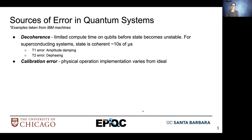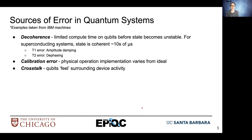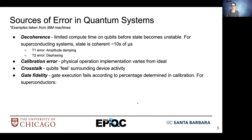We also encounter calibration error, which involves our physical operations varying from the ideal operation. While we're trying to establish the physical processes that implement a gate, our calibration or tuning processes were slightly off, so the physical implementation doesn't exactly model what we'd see in the ideal case. We also have crosstalk, where qubits feel their surroundings and are impacted — for example, two-qubit operations having reduced fidelity because they both executed at the same time. Additionally, we have gate fidelity: gate execution fails with a certain percentage determined during calibration. For superconductors, the gate failure rate for two-qubit gates is about one to two percent, and for single-qubit gates around 0.1 percent.